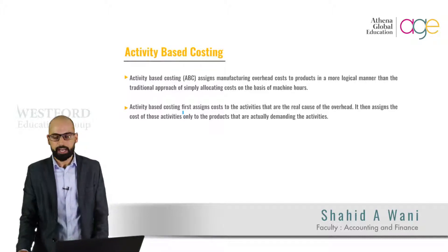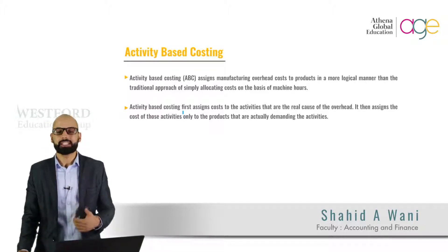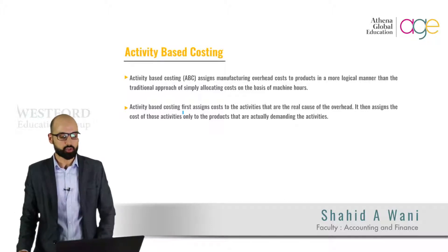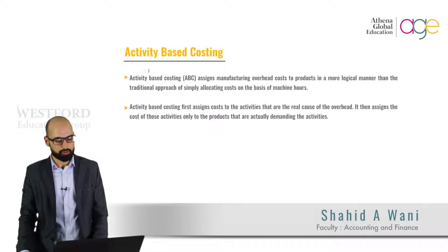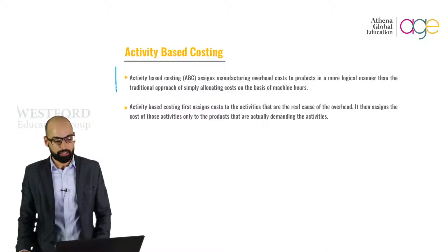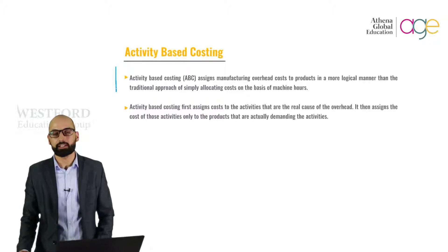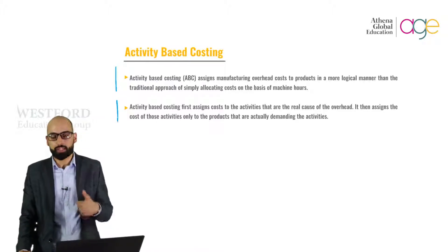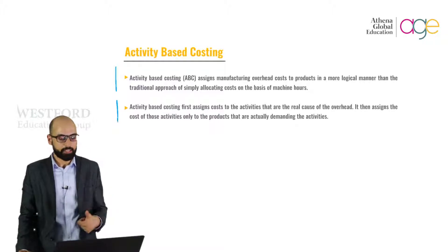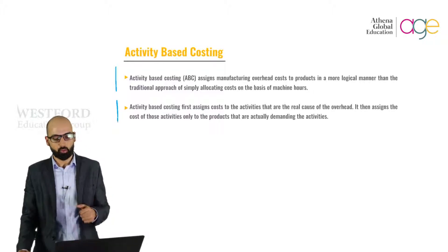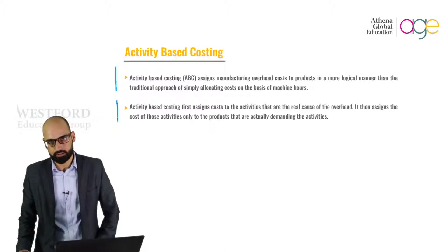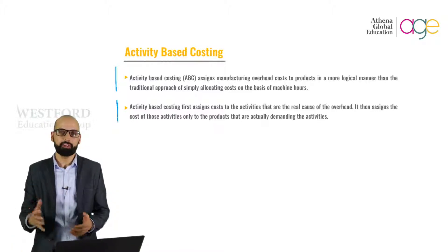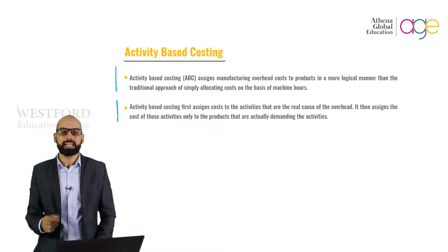The simple practice behind activity-based costing is quite understandable. Activity-based costing assigns manufacturing overhead costs to products in a more logical manner than the traditional approach of simply allocating costs on the basis of machine hours. It first assigns costs to the activities that are the real cause of the overhead, then assigns the costs of those activities only to the products that are actually demanding them. Every cost is traced back to the activity that is causing it.